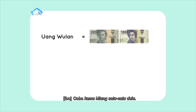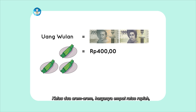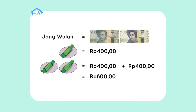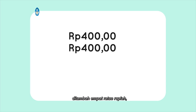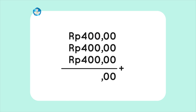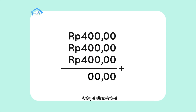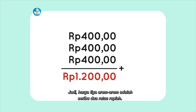Kalau satu arem-arem harganya Rp400. Kalau dua arem-arem harganya Rp400 ditambah Rp400 sama dengan Rp800. Kalau tiga arem-arem harganya Rp400 ditambah Rp400 ditambah Rp400. Satuannya 0 ditambah 0 ditambah 0 sama dengan 0. Puluhannya juga sama. Lalu 4 ditambah 4 sama dengan 8, ditambah 4 lagi sama dengan 12. Jadi harga tiga arem-arem adalah Rp1.200.